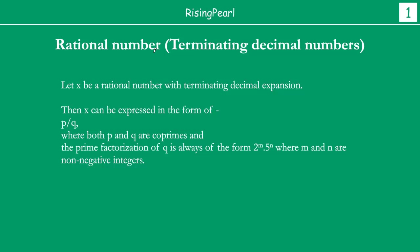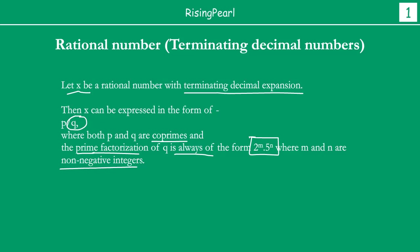So in the last video, we saw that if x is a rational number with a terminating decimal expansion, then x can be expressed or written in the form of p by q, where both p and q are co-prime. Co-prime means no common factor except 1. And the prime factorization of q, which is the denominator, is always of the form 2 to the power m times 5 to the power n, where m and n are non-negative integers.